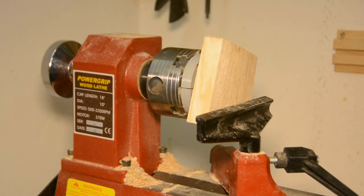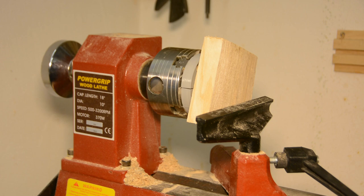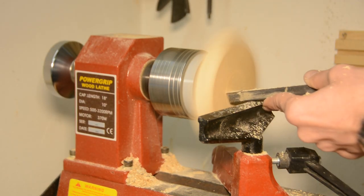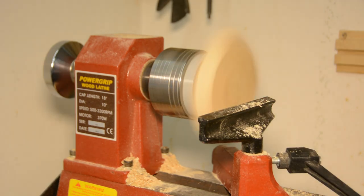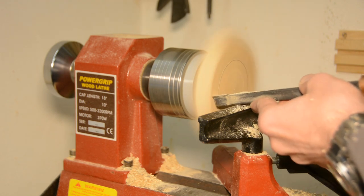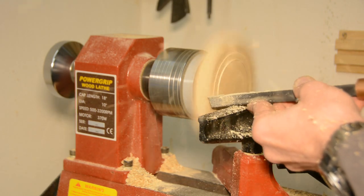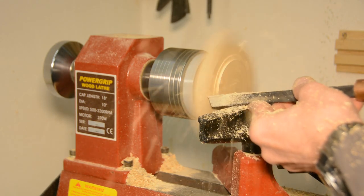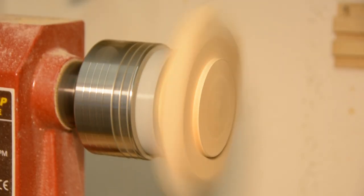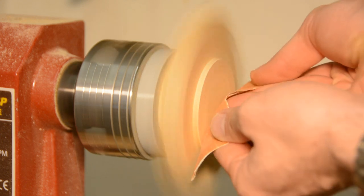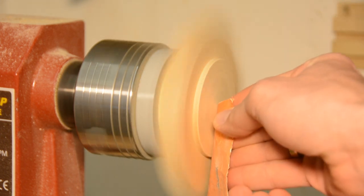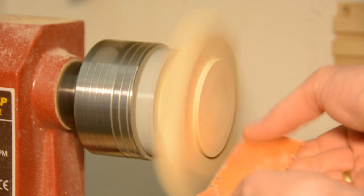We can now use a scraper to work on the underside of the lid. This tenon keeps the lid on the glass and can also be used to hold the lid in the chuck when working on the upper side of the lid. After cutting the tenon we can sand it.